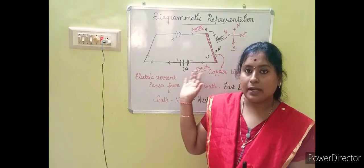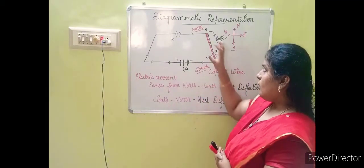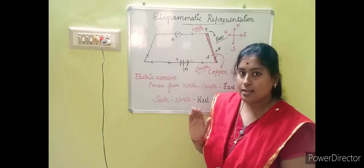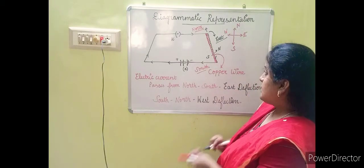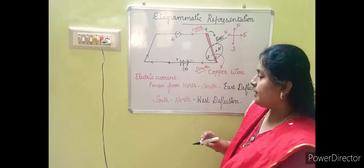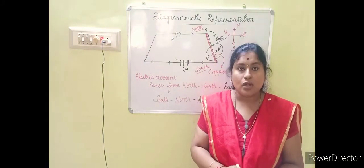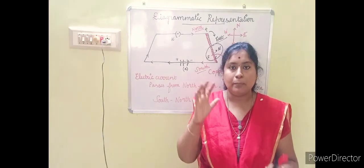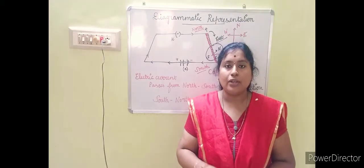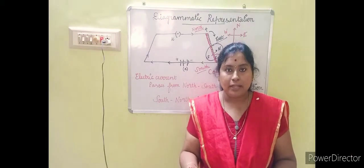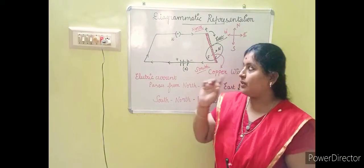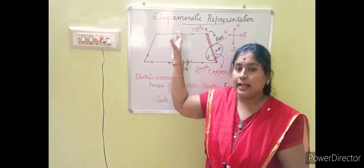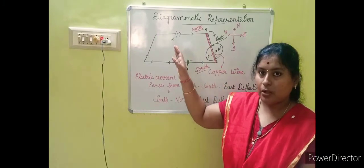We place the compass needle near or over the copper wire, which is connected to the circuit. The compass needle has four directions and will usually point in the north-south direction. Now we will learn what changes happen in the compass needle when current is passed through the circuit. When you plug in the key, the current starts to pass through the circuit and through the copper wire.